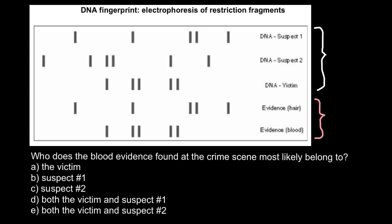We have two suspects here and the DNA fingerprint of the victim. The question is: who does the blood evidence found at the crime scene most likely belong to? Here is the blood evidence and this is the DNA fingerprint of the blood collected at the crime scene.